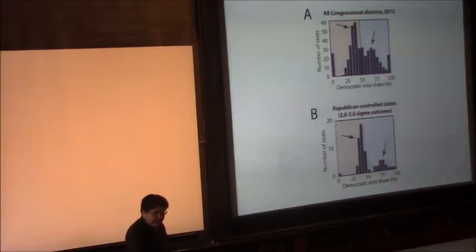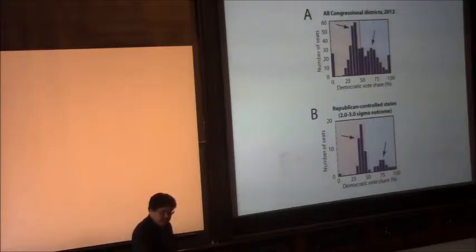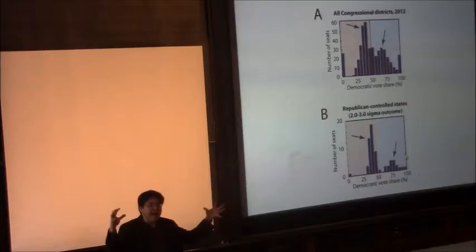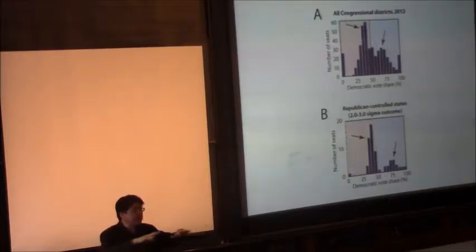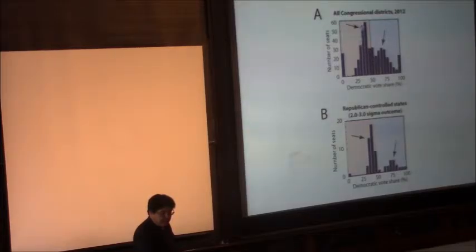And you can see here, this is now states that were one-party control redistricting. In particular, it's Republican-controlled states, and these are the states where they achieved the greatest gains relative to what a simple statistical model would predict would be the number of seats they get. And the seats where they got the biggest gains are also states where they were able to carve out districts for themselves that they won very narrowly, where the Democratic vote share is close to 40%, and where Democrats were packed into districts where they won by very large margins.